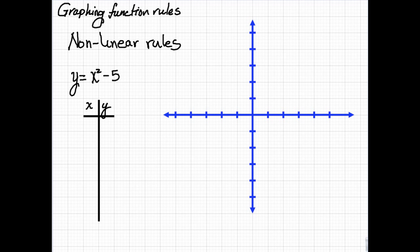I'd like to show you one more example of a nonlinear rule, y equals x squared minus five. This is the first time we've seen an x squared. And when there is an x squared, the graph is curved. So let's make the table and then we'll plot points.